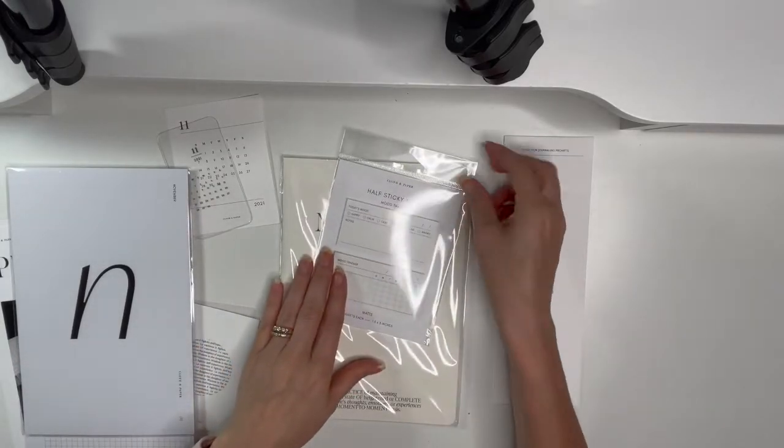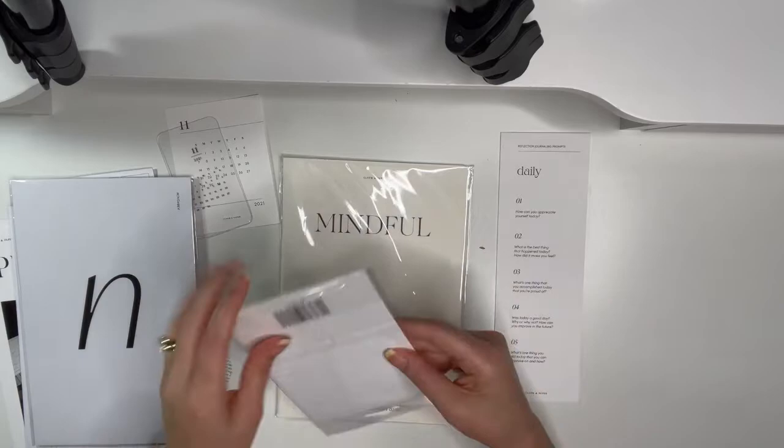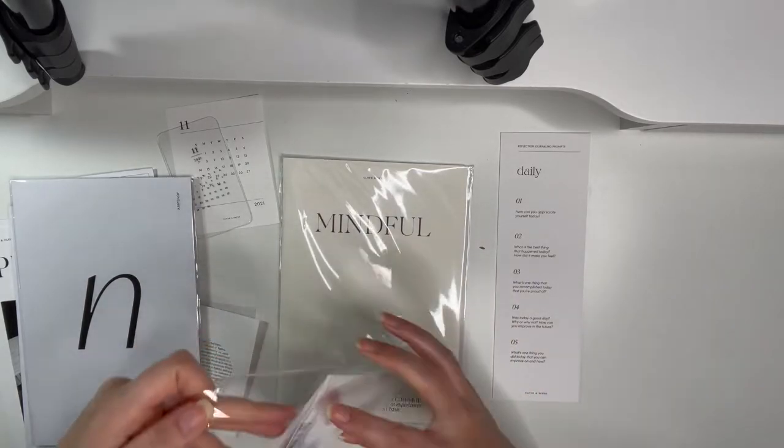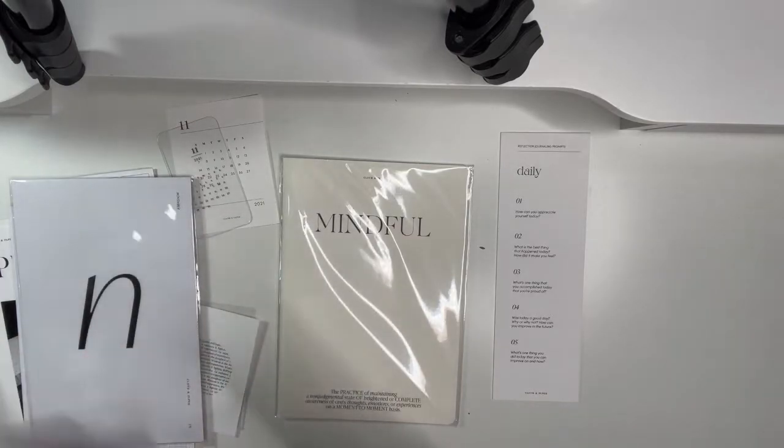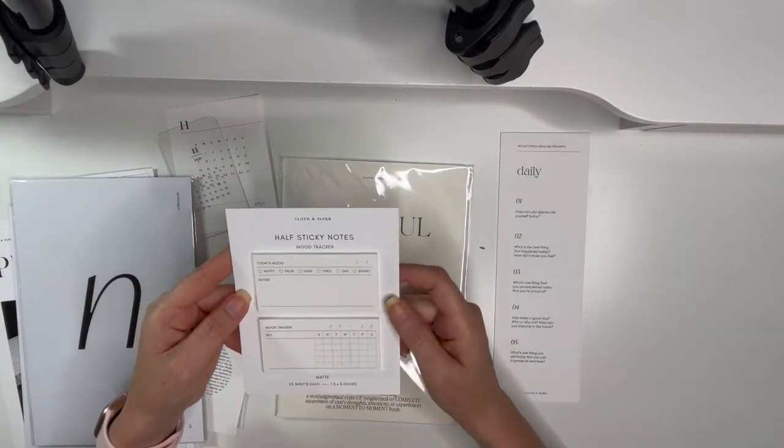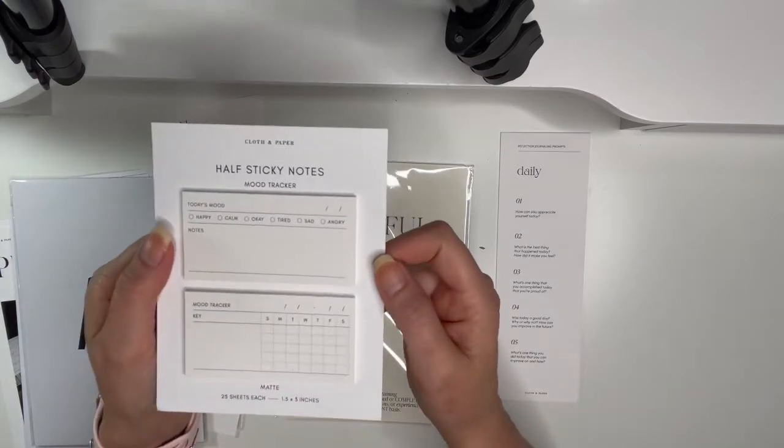Okay, that's those. And then these, I saw the only thing out of this subscription box that I've seen online are these. I've been too busy actually to watch YouTube and look for the unboxings, but I did see somebody on Instagram posted this and I thought that was pretty cool. So they're half sticky notes, their mood trackers.